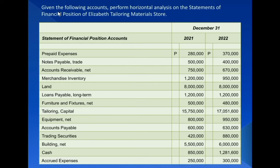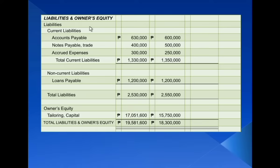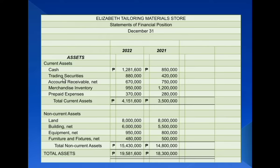Let's have this problem. Given the following accounts, perform horizontal analysis on the statements of financial position of Elizabeth Tailoring Materials Store. Obviously, this is not a formal statement of financial position, but only statement of financial position accounts. Therefore, from this information, we must first prepare the entity's statements of financial position or balance sheets as of the years ended December 31, 2021 and 2022, with the assets section on one hand, and the liabilities and owners' equity section on the other. The liabilities are divided into current and non-current, just like the assets.